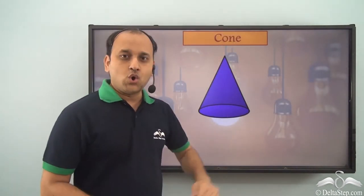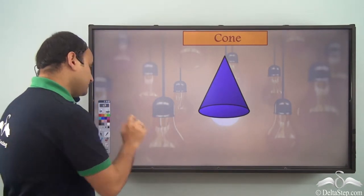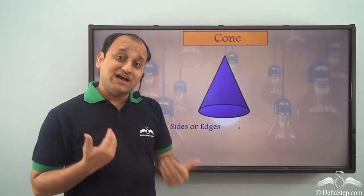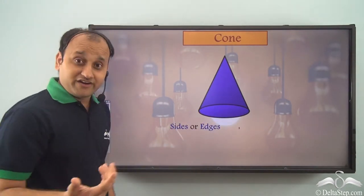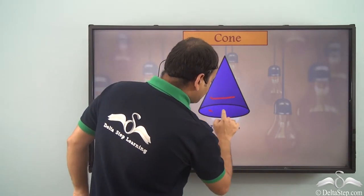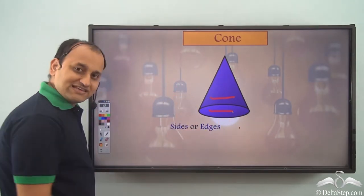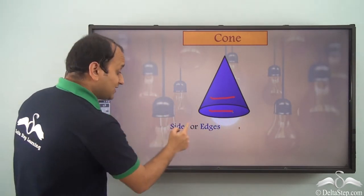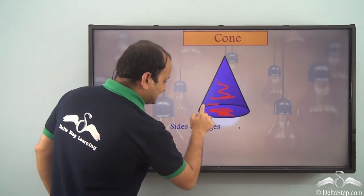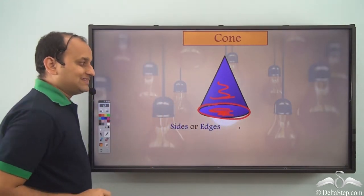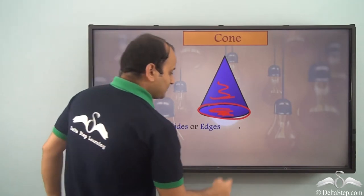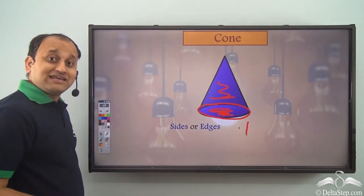What about a cone? How many sides or edges does it have? In such shapes where it is difficult to find a vertex, we usually see the difference between two faces — the line that joins two faces is called an edge. We have this face and this face at the bottom, and this is the edge that joins these two faces. This is the only edge in the case of a cone — just one edge.